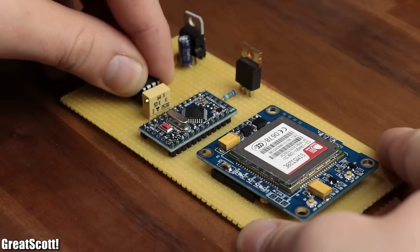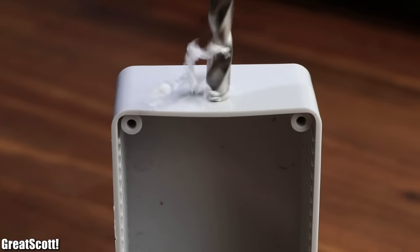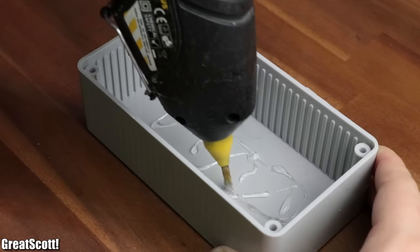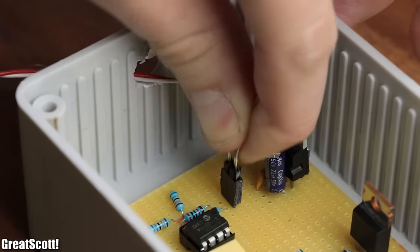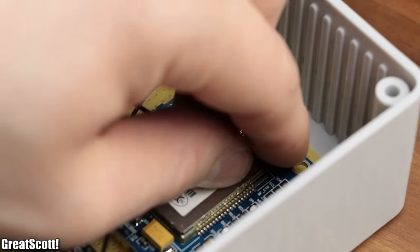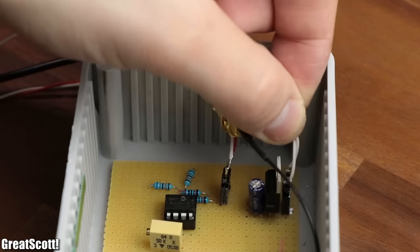Once the circuit was complete, I drilled a 10mm hole into a suitable project box, secured the circuit inside it and attached the piezoelectric transducer, the GPS and GSM antenna and the key switch to the circuit.